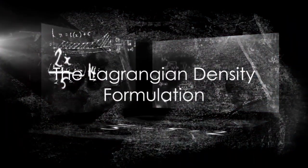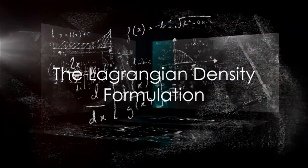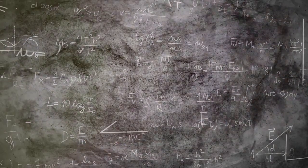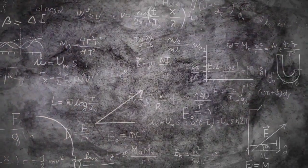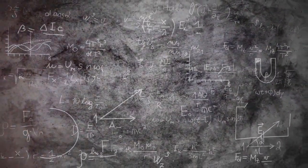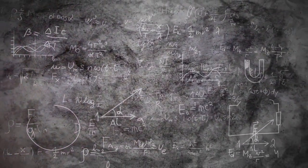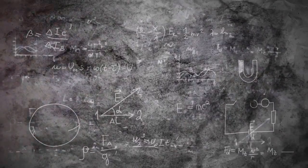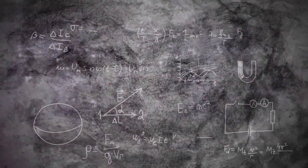The story begins with the Lagrangian density formulation. This cornerstone of theoretical physics is a compact mathematical description of a physical system.